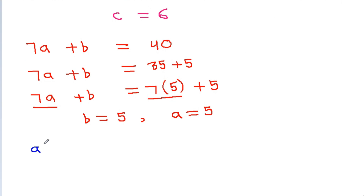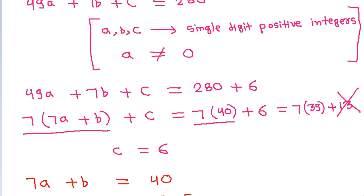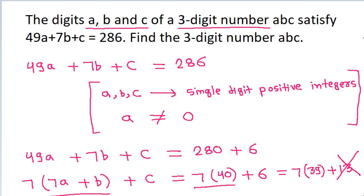So a, b, and c are: a is 5, b is 5, and c is 6. Therefore the three-digit number abc is 556.